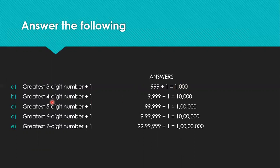Greatest four-digit number plus one: the greatest four-digit number is 9,999. Adding one gives 10,000, which is the smallest five-digit number. Greatest five-digit number plus one: the greatest five-digit number is 99,999. Adding one gives 1,00,000, which is the smallest six-digit number. Greatest six-digit number plus one: the greatest six-digit number is 9,99,999. Adding one gives 10,00,000, which is the smallest seven-digit number.